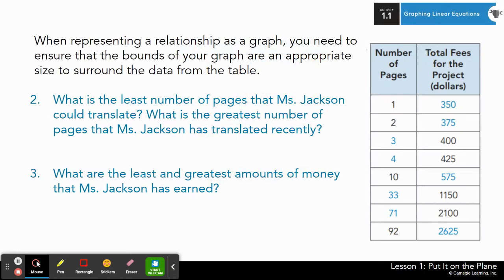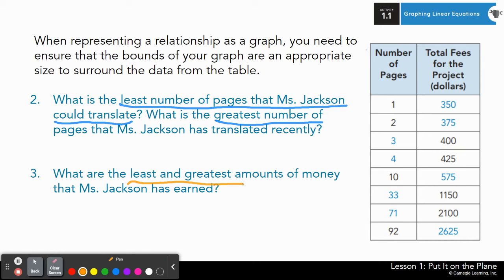Alrighty, let's move forward. When representing a relationship as a graph, you need to ensure that the bounds of your graph are appropriate size to surround the data from the table. What is the least number of pages that Ms. Jackson could translate? What is the greatest number of pages that Ms. Jackson has translated recently? And three says, what are the least and greatest amounts of money that Ms. Jackson has earned? Go ahead and set a timer for about one minute and quickly answer these questions. Pause here.